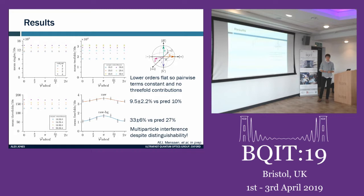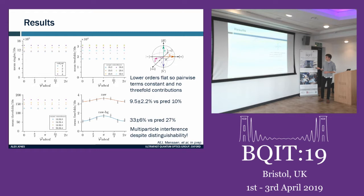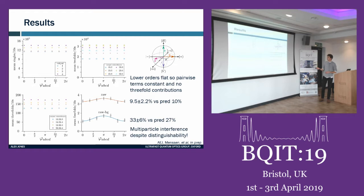The bottom-left shows three-fold coincidences — four different ways of getting three clicks at the output — again flat, confirming we've eliminated the triad phase contribution. The signal we're actually looking for is the four-fold coincidences as a function of phase, which should have a cosine shape. It's predicted to be 10% visibility — a very low visibility feature — and we measure 9.5 ± 2%. The background-subtracted four-folds account for double emissions from the down-converters. All lower orders are flat but we still see variation in four-fold coincidences, providing evidence that multi-particle interference occurs despite pairs of photons being in orthogonal states.